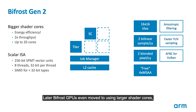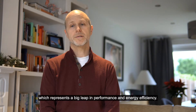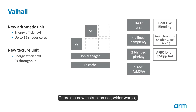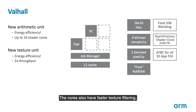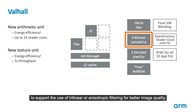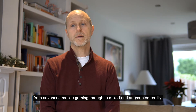Later Bifrost GPUs even moved to using larger shader cores, doubling the performance of each core and rebalancing the design, which gave considerable efficiency gains. In 2020, we launched the Valhall architecture, which represents a big leap in performance and energy efficiency. There's a new instruction set, wider warps and more concurrent threads to drive up the efficiency of the shader core. The cores also have faster texture filtering, doubling to four bilinear samples per clock to support the use of trilinear or anisotropic filtering for better image quality. All this makes our latest Mali GPUs ideal for graphically intensive applications, from advanced mobile gaming through to mixed and augmented reality.